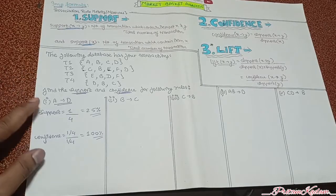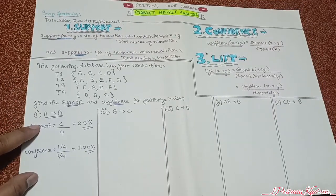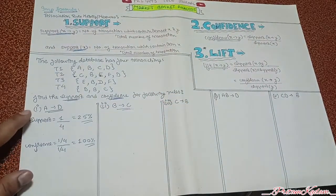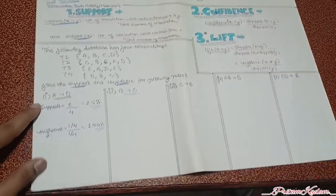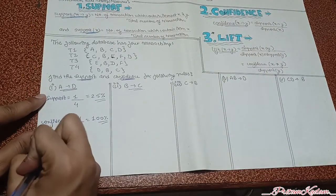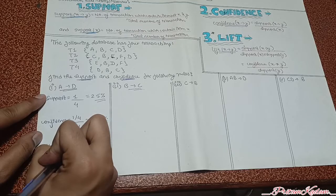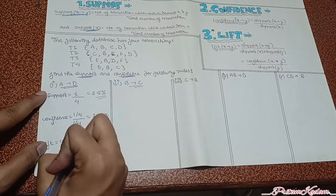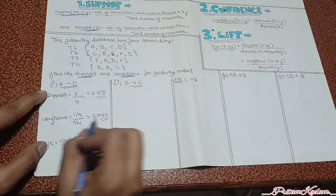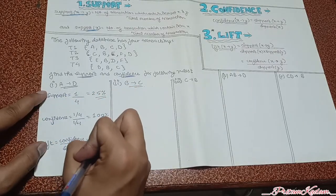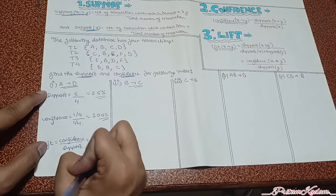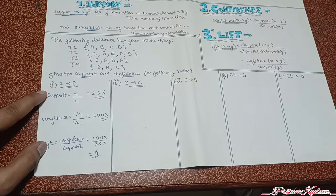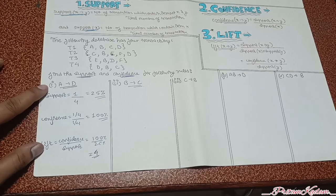They have not asked for lift, but let us solve it anyway. Lift equals confidence upon support, which is 100% upon 25%. That gives us a lift of 4. Now let us proceed to item set {B, C}.